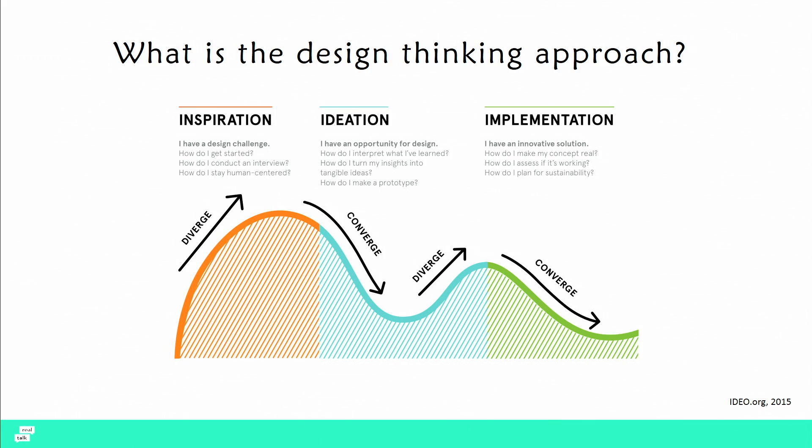Then we converge and diverge again, ending with an implementation phase that really focuses on failing quickly to learn fast in iterative cycles — trying lots of things in the real world, gathering data, figuring out what's working and what isn't, and then using that information to move forward.